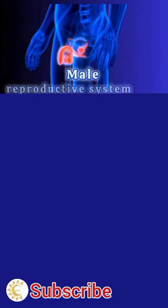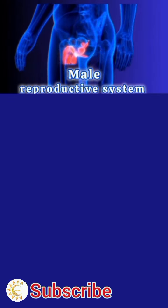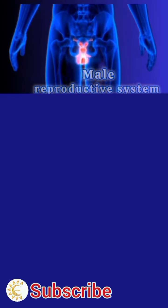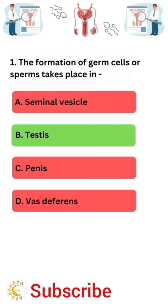Let's do some questions on the male reproductive system. The formation of germ cells or sperm takes place in? Testes is the correct answer.